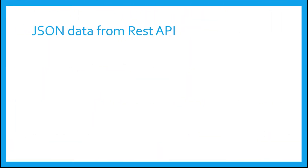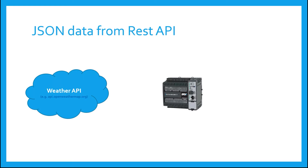Another growing field of data sharing is called a REST API. REST stands for Representational State Transfer, and API stands for Application Programming Interface. Again, you don't have to know this, but it's good to know that a Brics PLC can query a data source — in this case a REST API on the Internet — to gather data. An example is a weather API, say, at api.openweathermap.org.